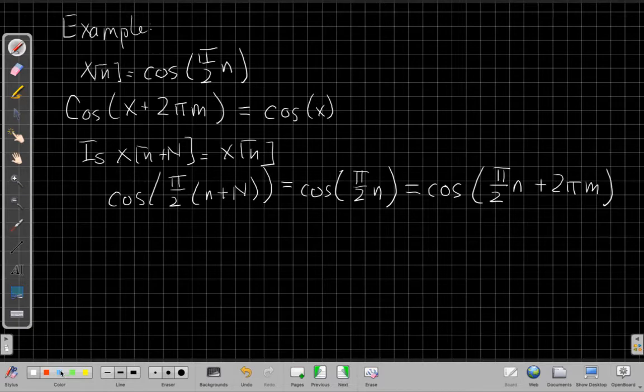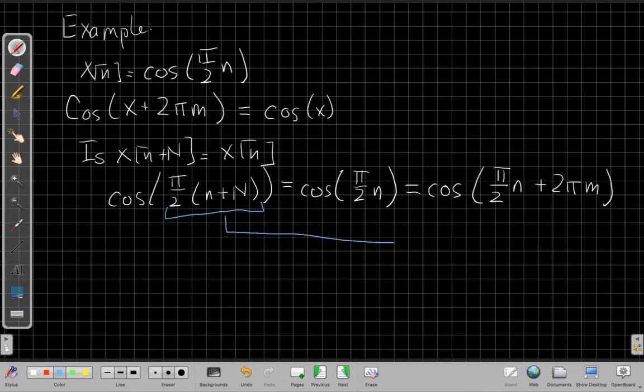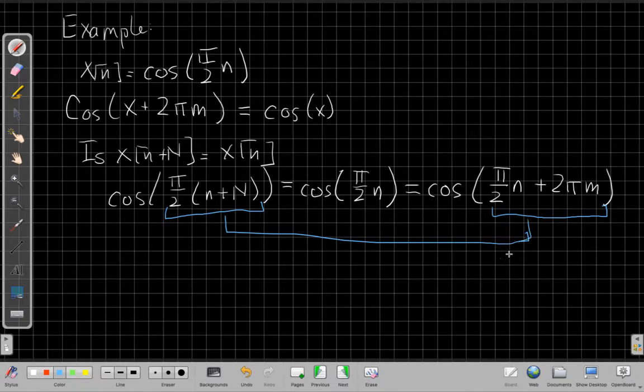And so to make these equal, I'm going to compare the arguments. I say I need the argument of this function to be equal to the argument of that. Right? If the two cosines are equal, if shifting by N in time is the same as moving the argument by some multiple of 2π M, then the cosines will line up and the signal will be periodic.